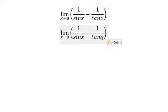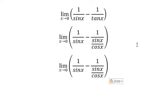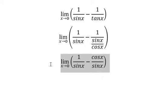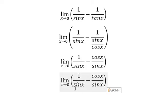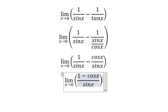For tan x, we can change it into sin x over cos x. For cos x, we can move it to the numerator and get cos x over sin x. Because we have the same common denominator, we have 1 minus cos x over sin x.